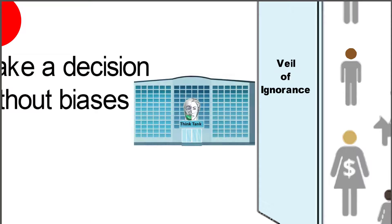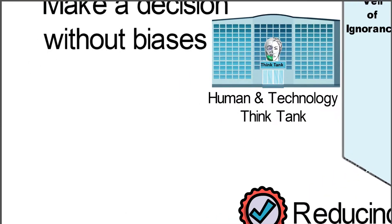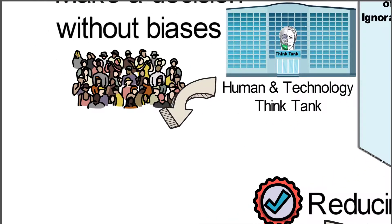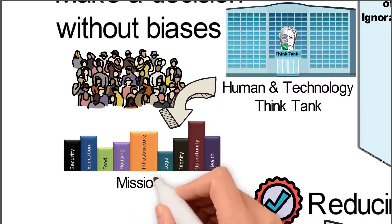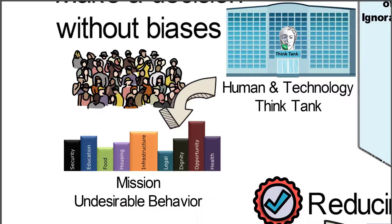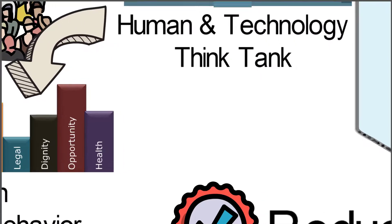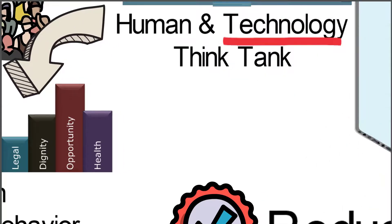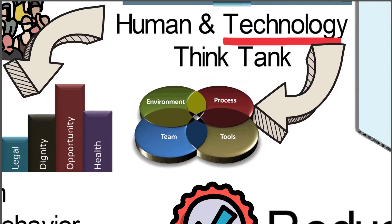What I'm suggesting is that we replace the human in the original position with a human and technology think tank, where the human part decides what the moral or social issues are that we're going to address — what is the mission and what is undesirable behavior. From that, the technology actually puts together the solution. It's the technology that identifies the environment, the process, the team, and the tools — that's called the capacity — what is needed in order to make this successful. That's what I suggest here.